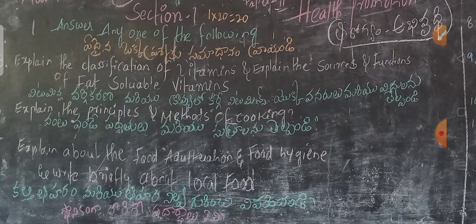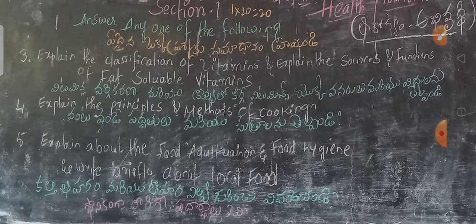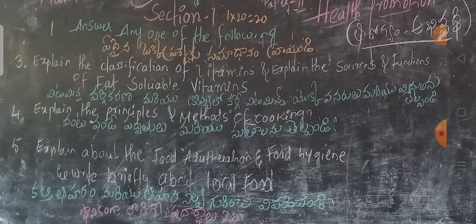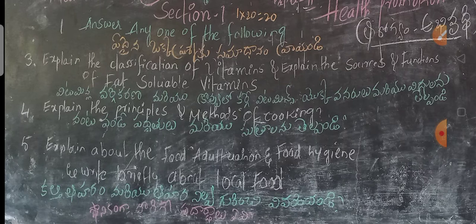In the practical record, the questions include: explain the classification of vitamins, explain the sources and functions of fat-soluble vitamins, and explaining the principles and methods of cooking. The 5th question is: explain about food adulteration and food hygiene, and write briefly about local food. These are the section one questions.